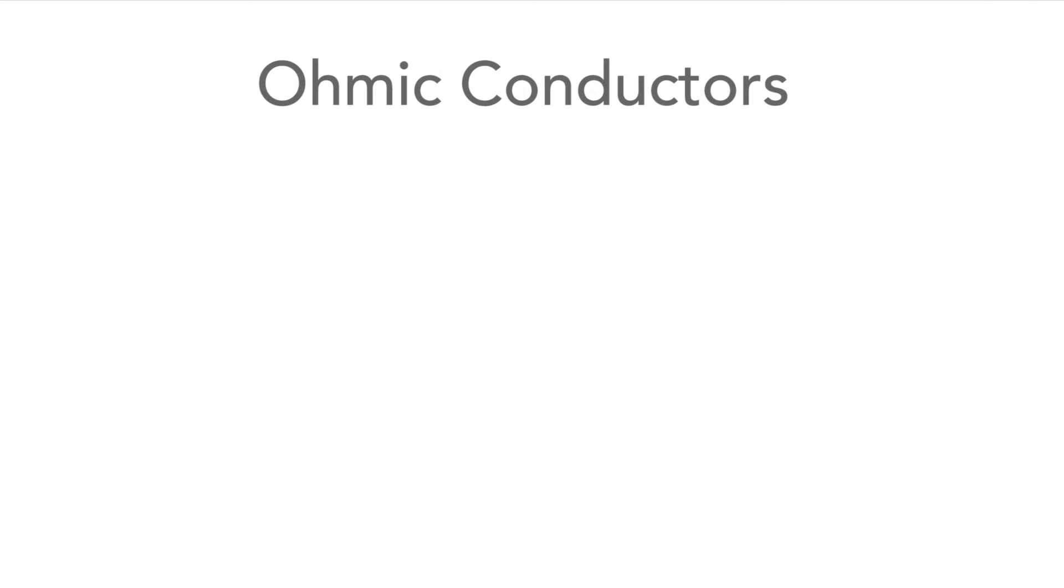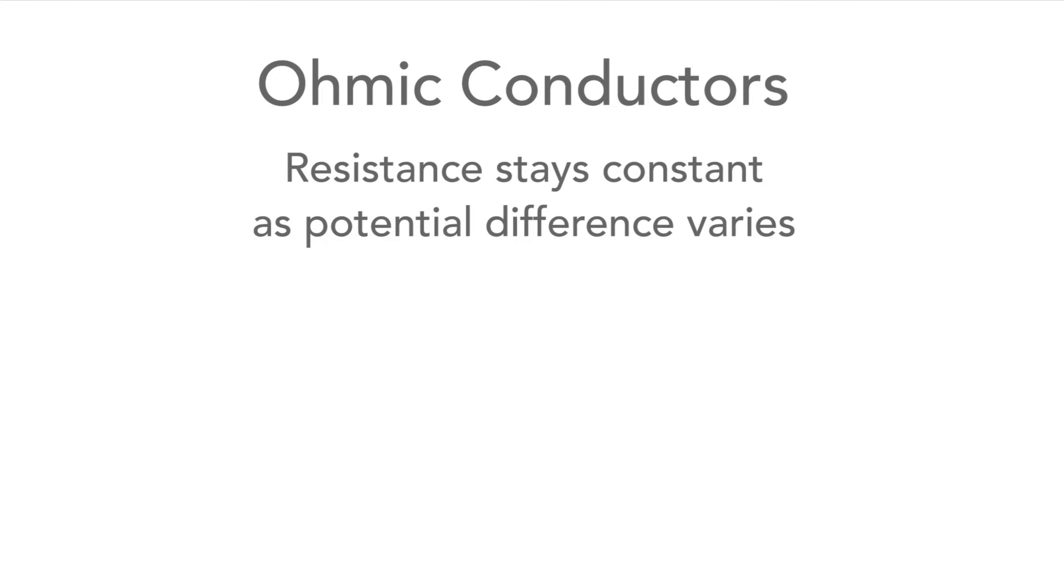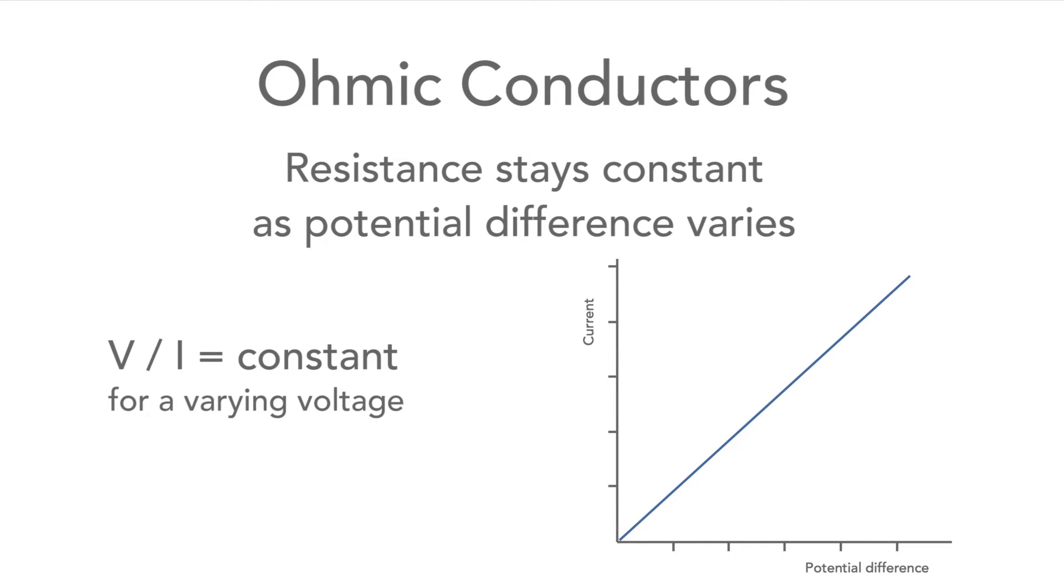Ohmic conductors or components are ones where the resistance remains the same whatever the potential difference. The ratio of V to I remains constant and we should get a straight line plot if we look at a graph of current and voltage.